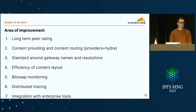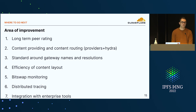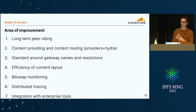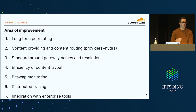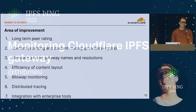Q: For these improvement areas, do you plan to actively put time into them — thinking about potential collaboration? Most likely not all of them, but some we're actively working on. Name resolution is something we're actively working on. Long-term peer rating is something we're also considering. Distributed tracing and integration with enterprise monitoring is more of an ongoing effort because we need it for our operations, but we don't yet know how much it benefits others.